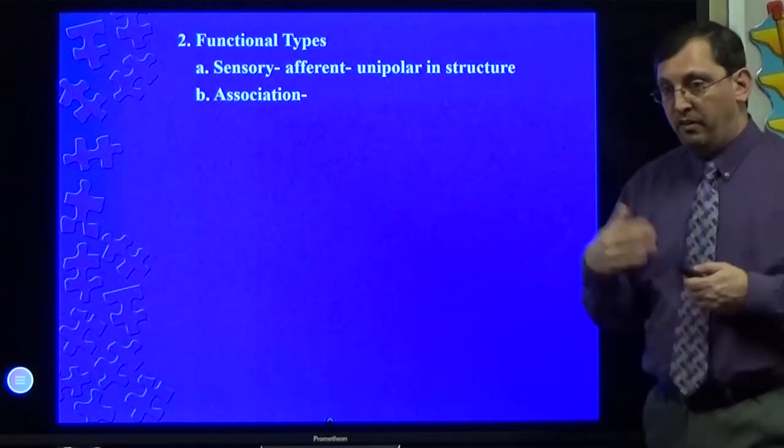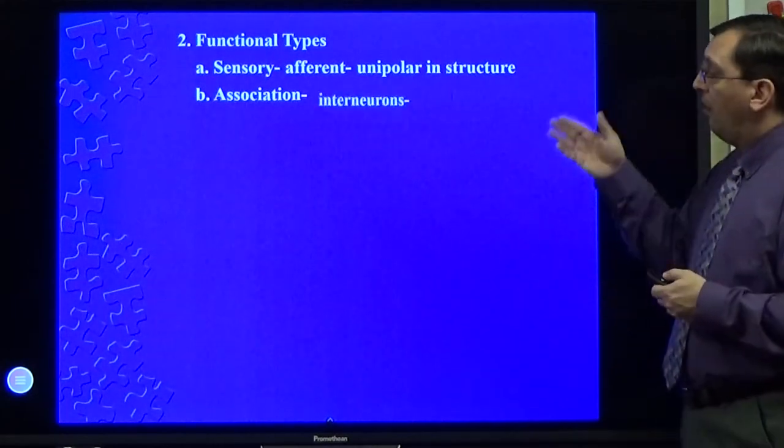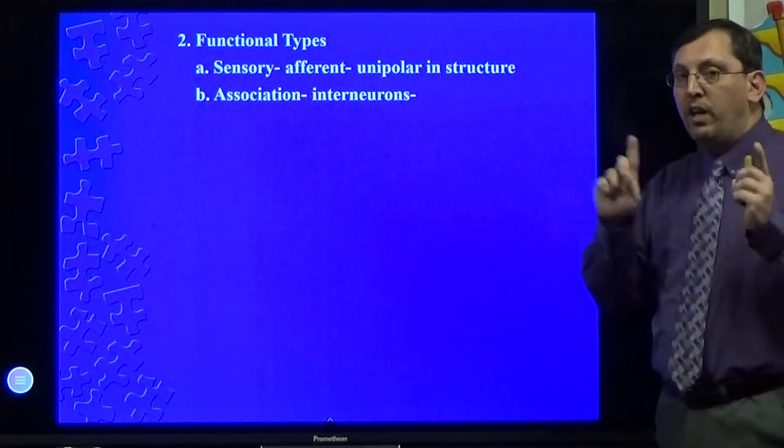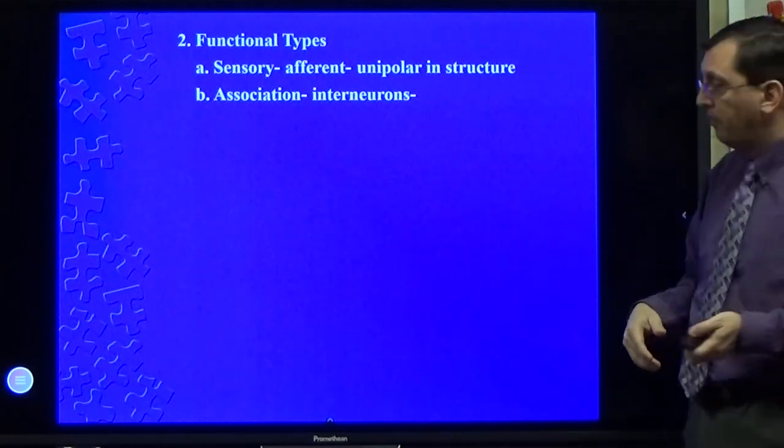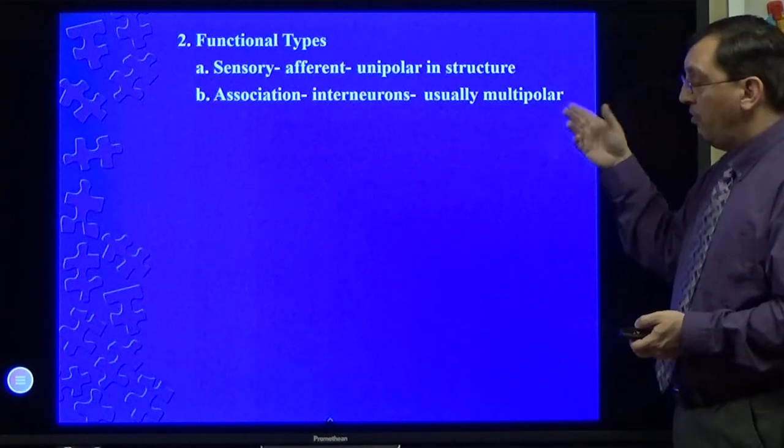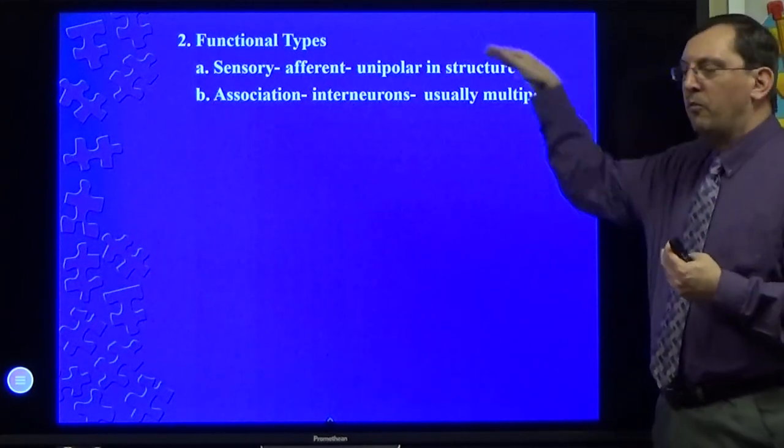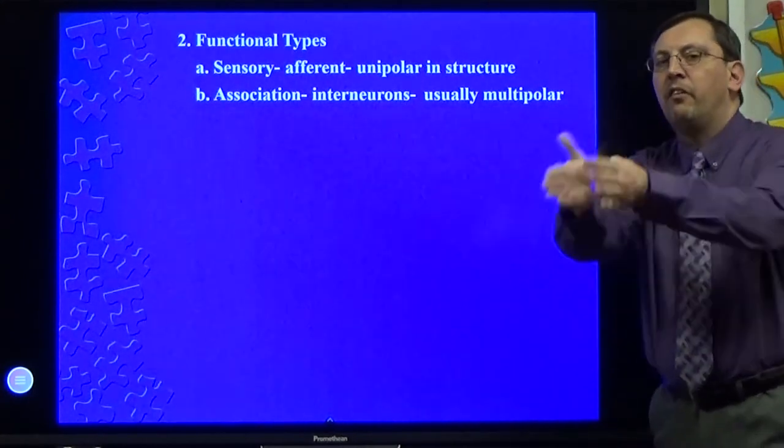Association neurons, because they associate things, are called interneurons because they go between the two main types of neurons. They are going to take information from the sensory and move it on to the other types. They are usually multipolar. Makes sense. I am getting a lot of information from lots of sources. I can condense it down and send it forward.